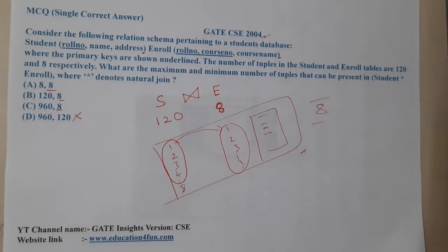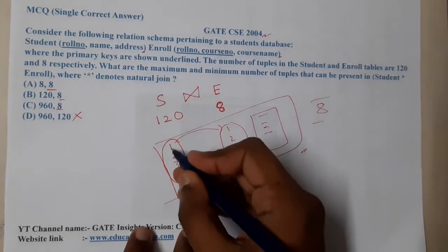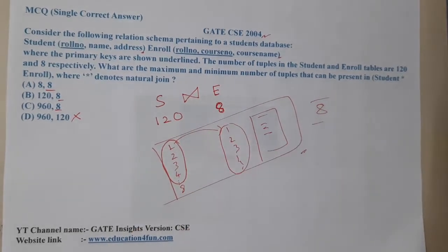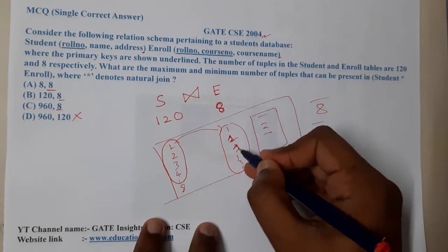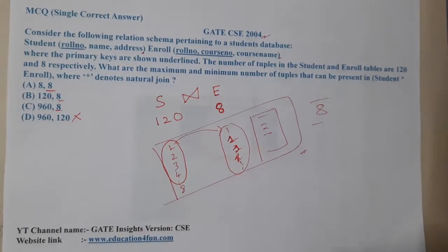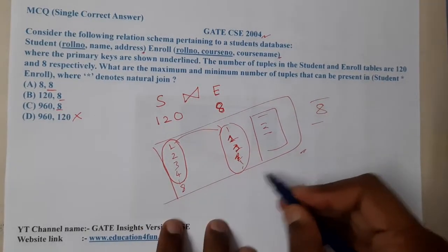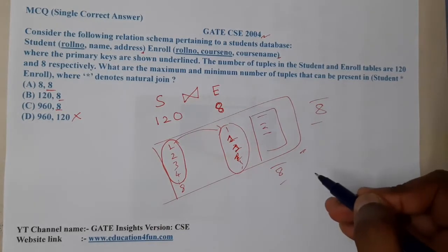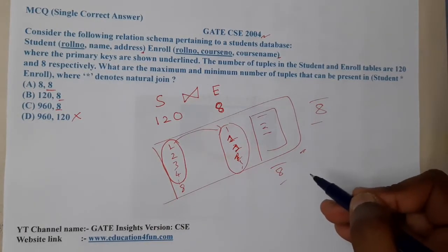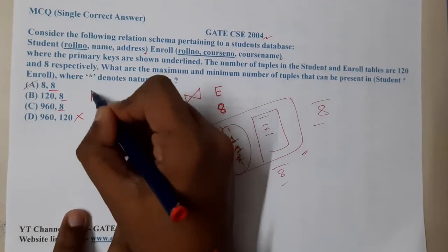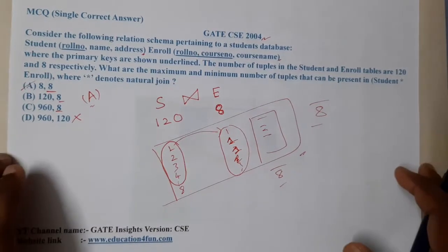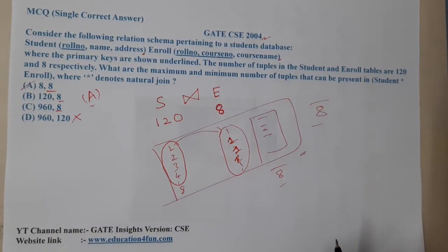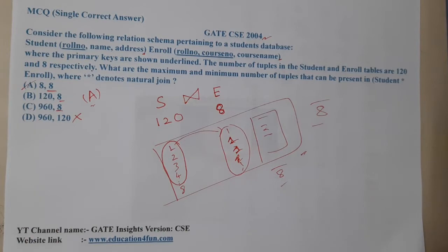Now for the maximum: can a student take multiple courses? Yes. But even if one student takes all 8 courses, you still get only 8 tuples in the result. So the maximum is also 8. Option A — both minimum and maximum are 8 — is the correct answer.